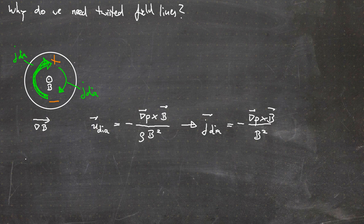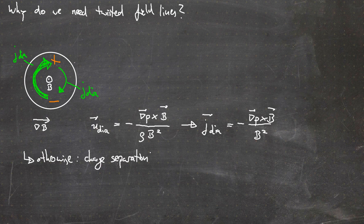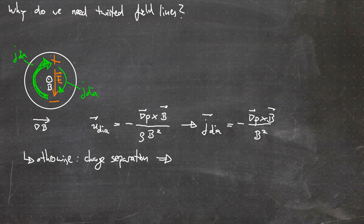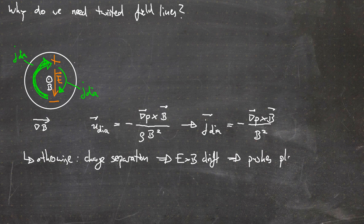The charge separation produces positive charges on the upper side and negative charges on the bottom side, generating an electric field. This electric field combined with the magnetic field results in an E×B drift. Since E×B drift is charge-independent, it pushes the whole plasma to the outboard side — toward the wall — giving us no confinement, and thus no suitable configuration for a fusion reactor.